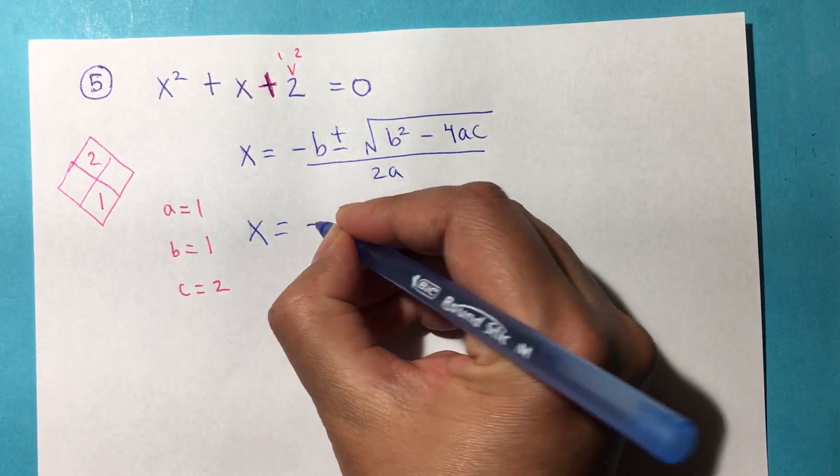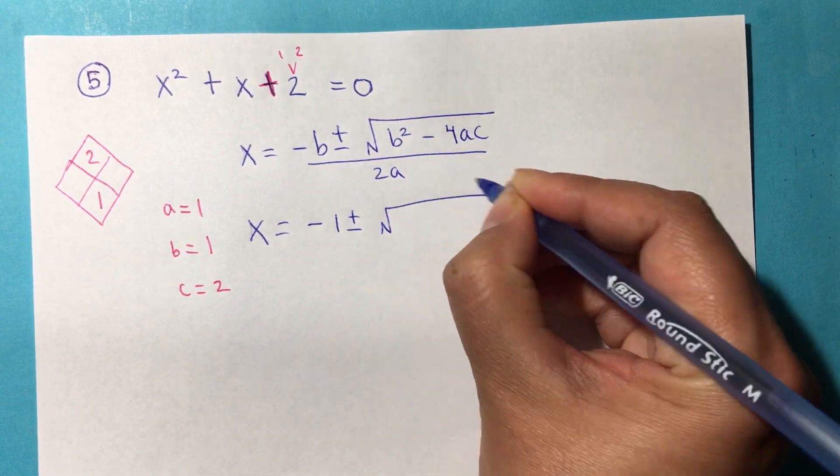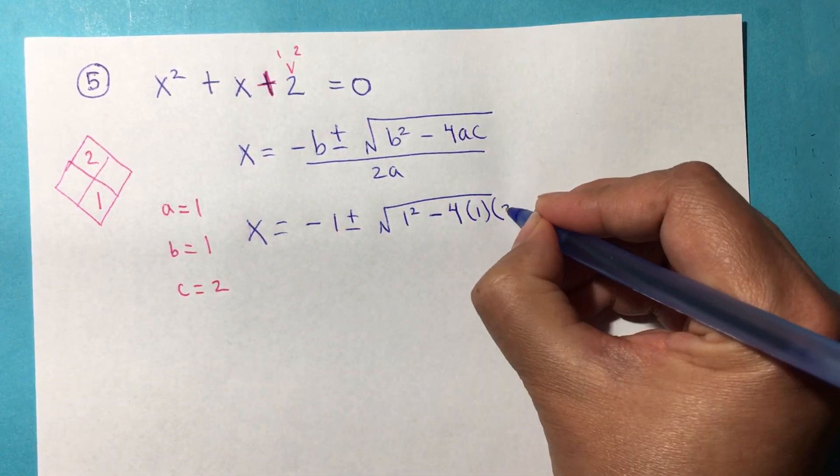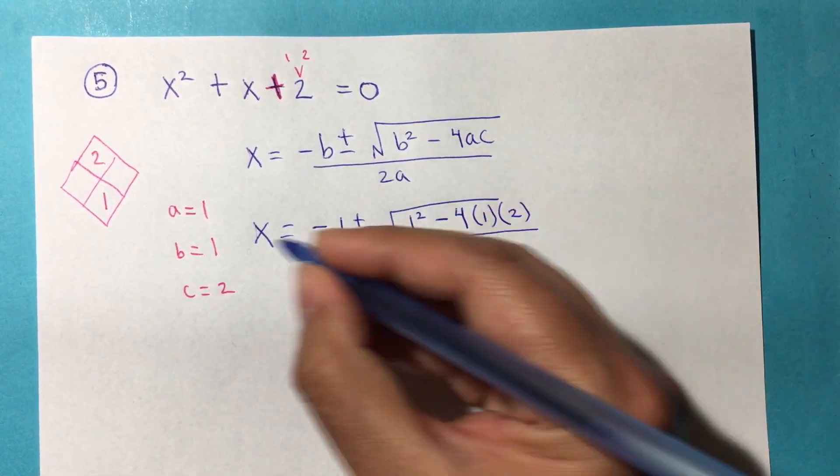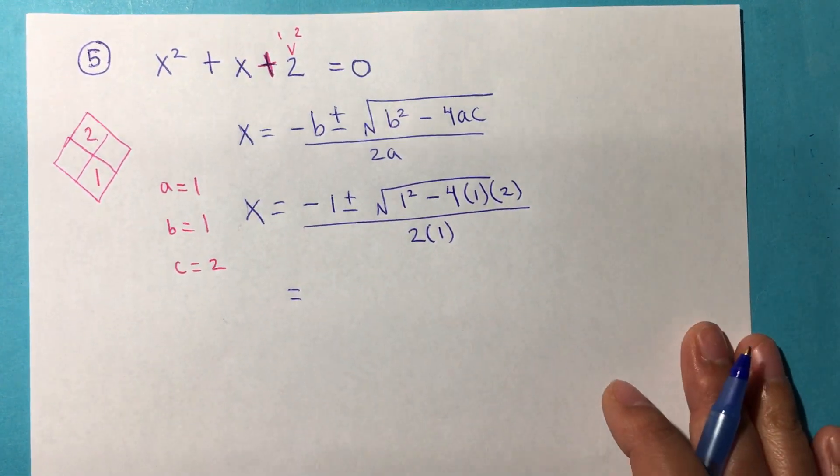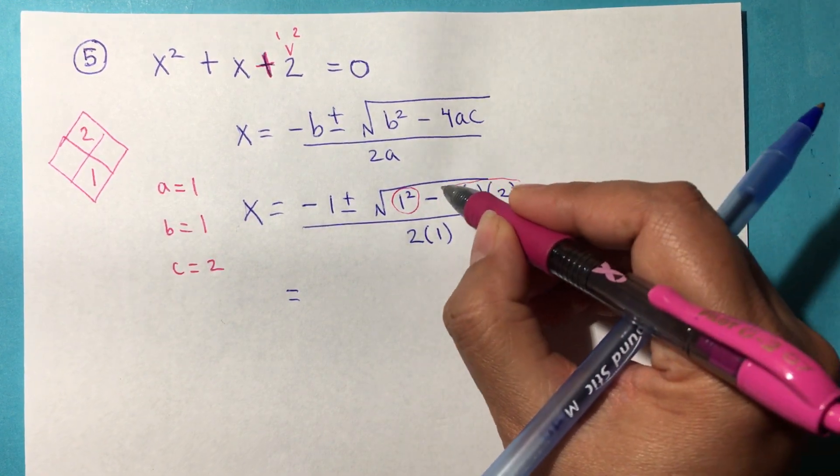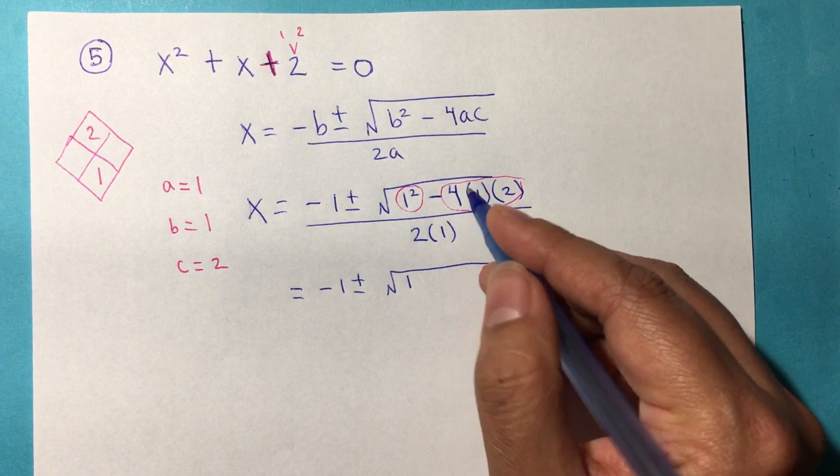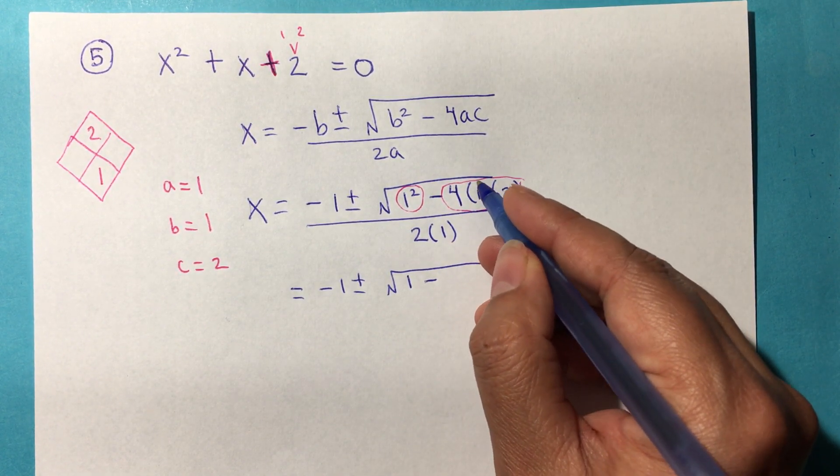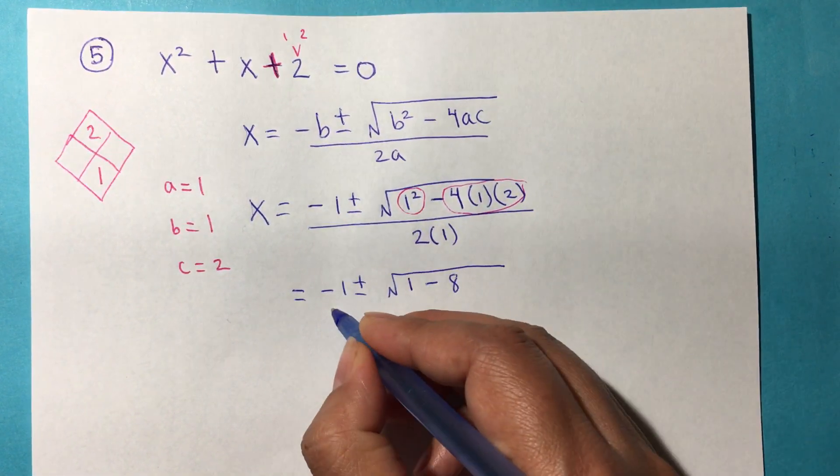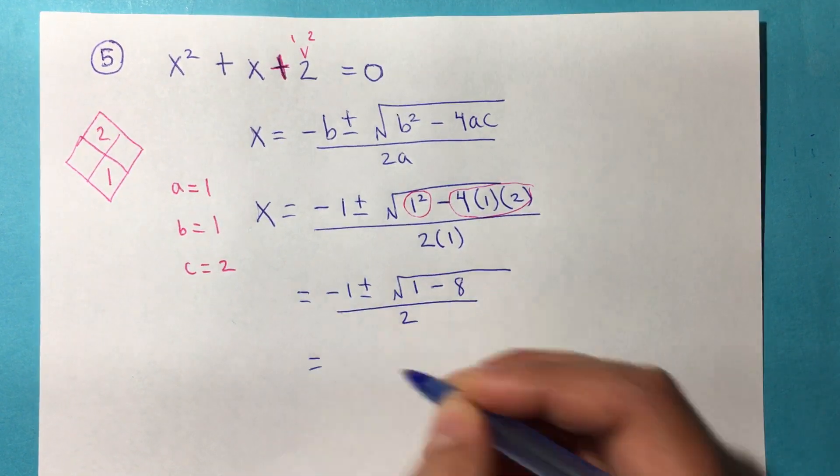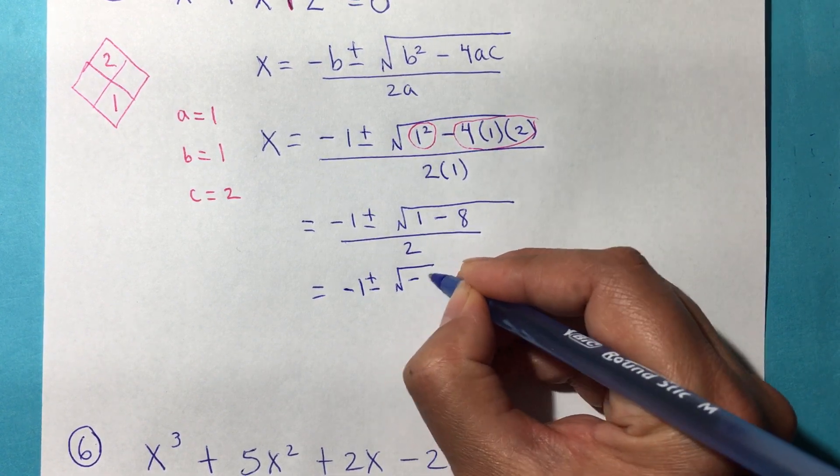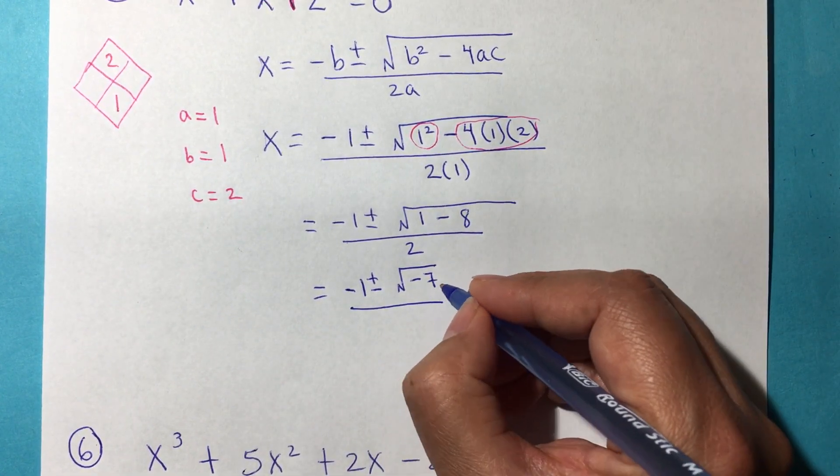What are a, b, and c? a is always with x², b is always with x, so the coefficients are 1 and 1, and c is always with no variable, in this case positive 2. We start substituting: negative b is negative 1, ± √(b² is 1² - 4 times a which is 1 times c which is 2) divided by 2 times a which is 1. We start simplifying. Negative 1 ± √(1 - 8) / 2. We get -1 ± √(-7) / 2.